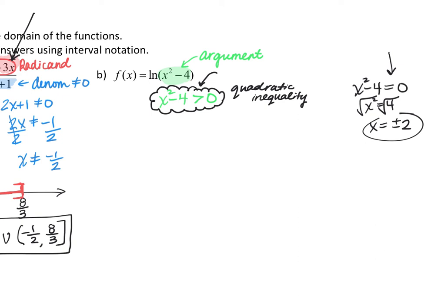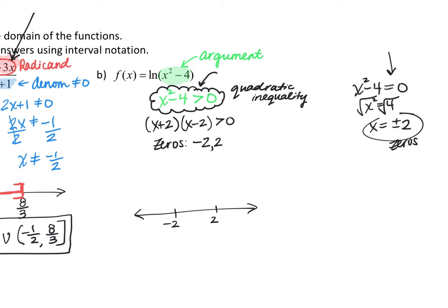Rather than adding 4 and square rooting both sides, I prefer to factor this expression. So I would recommend factoring, which allows you to quickly see the zeros are negative 2 and positive 2. You then put those zeros on a number line and test around them. I'll pick a number smaller than negative 2 — say negative 3 — a number between negative 2 and 2, like zero, and a number bigger than 2.